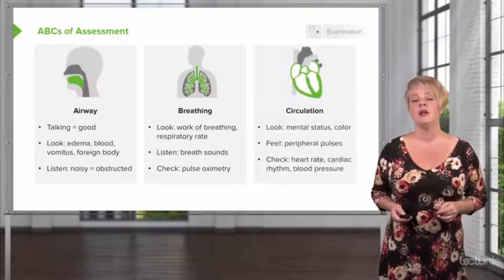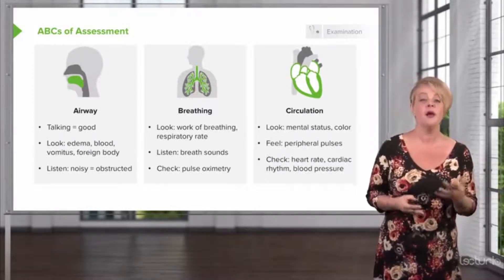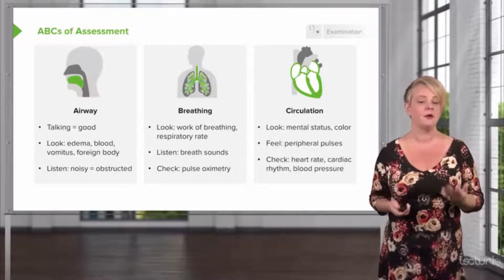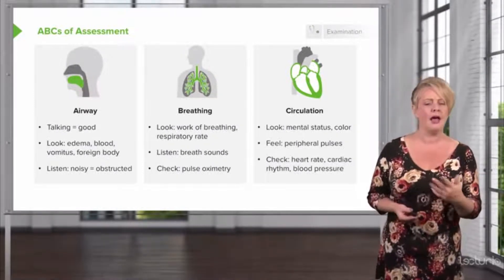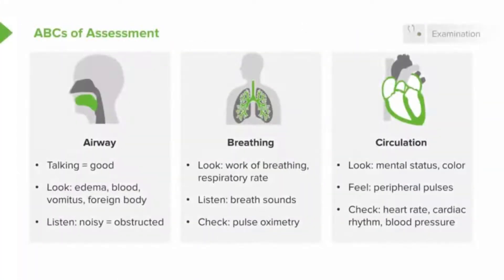Lastly, we want to check circulation. Part of circulation is a general gestalt look at the patient — if they're nice and pink, that's a good sign they're perfusing their brain and body adequately, whereas if they're pale, cyanotic, or altered, they may not be perfusing as well as we'd hope. We also want to feel peripheral pulses. A patient who's awake and talking obviously has a carotid pulse, but if they have a weak or absent peripheral pulse, that could indicate inadequate perfusion to the periphery. We also want to look at their vital signs — heart rate, cardiac rhythm, and blood pressure — as these all give us important clues about the adequacy of circulation.